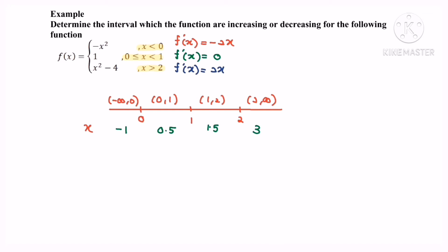Referring to the piecewise function: for x less than 0, the function is negative x squared; for 0 to 1 (where 1 is not included), the function equals 1 (a constant); for x greater than or equal to 2, the function is x squared minus 4. Note that for the interval 1 to 2, there is no defined function, so f'(x) is 0.